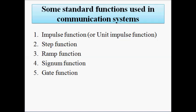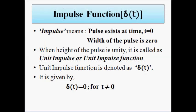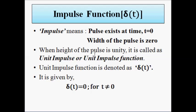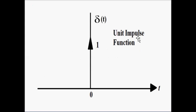The first standard function is the impulse function, denoted delta(t). Impulse means the pulse exists at time t equals 0 — it appears only at the origin. It is a pulse signal whose width is 0 and only appears at t equals 0. This is a unit impulse signal because its amplitude value is unity, 1. That is why it is called the unit impulse function.